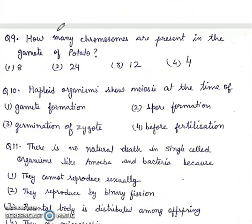Question 9. How many chromosomes are present in the gamete of potato? 1. eight, 2. twenty-four, 3. twelve, 4. four. Right answer will be 2nd, twenty-four.